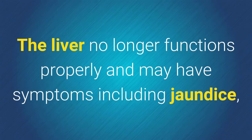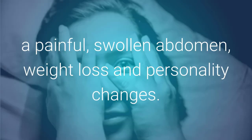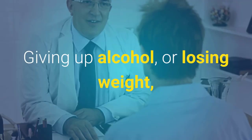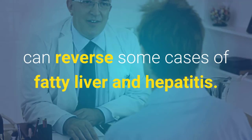Fibrosis, the third stage, is the process of scar formation. Scarring may gradually build up in the liver, causing cells to die and reducing the liver's blood supply. As long as sufficient numbers of liver cells remain, the liver continues to function.